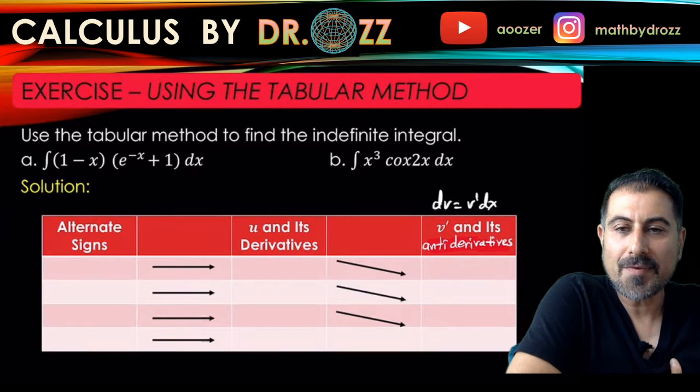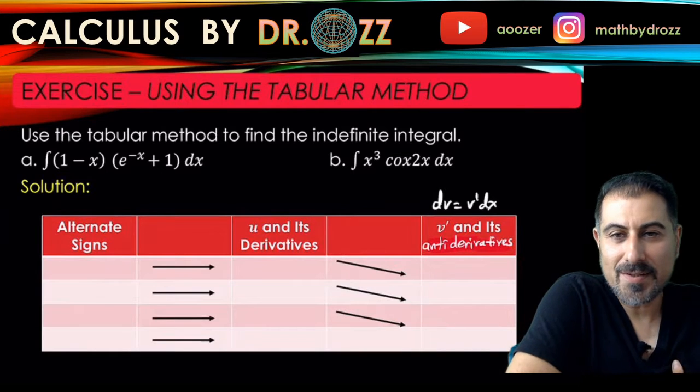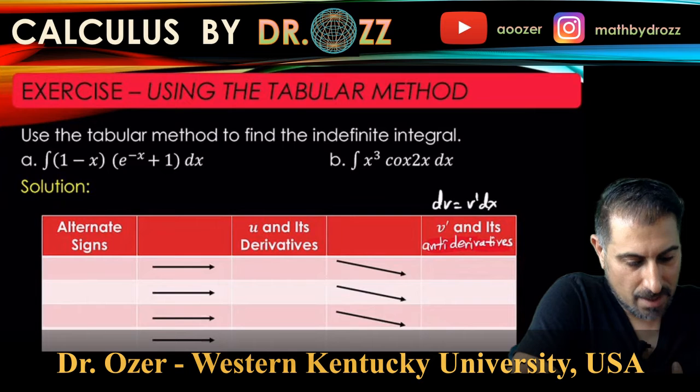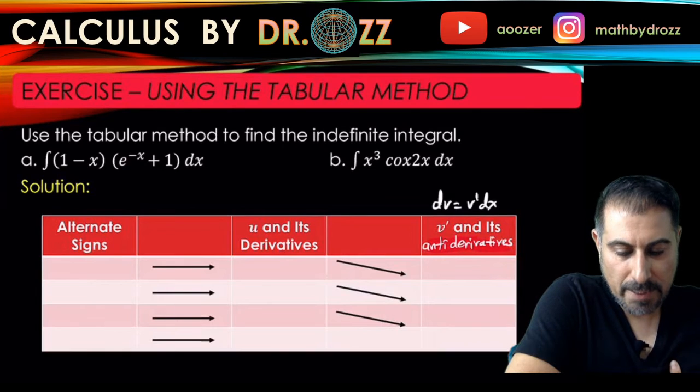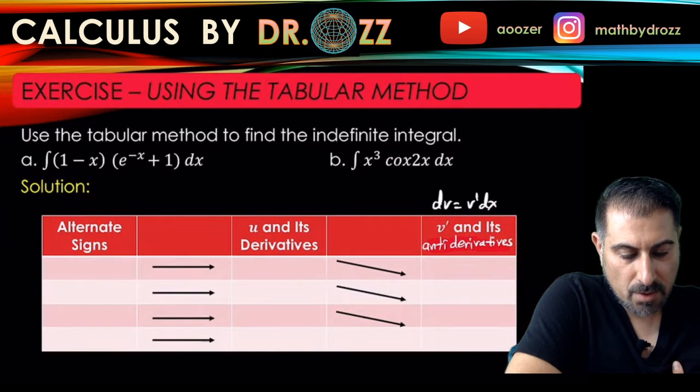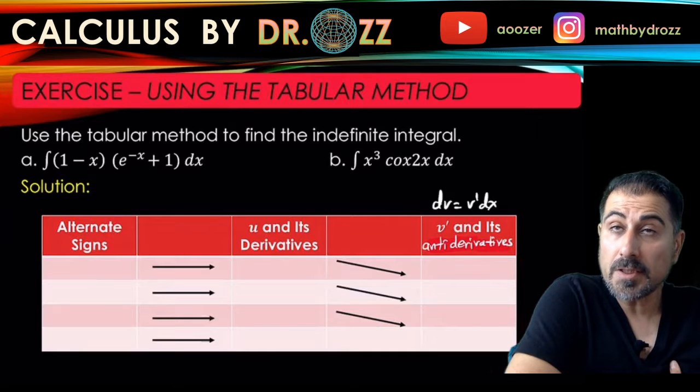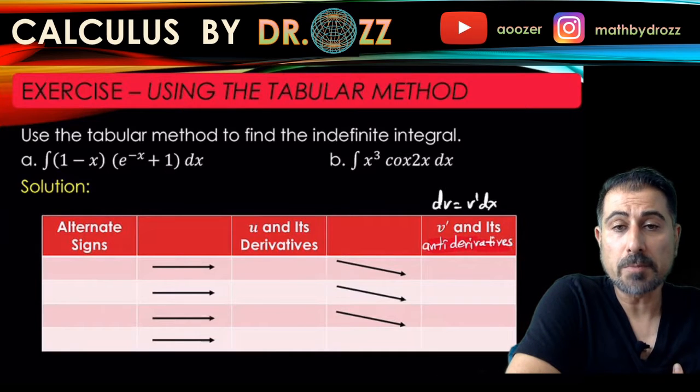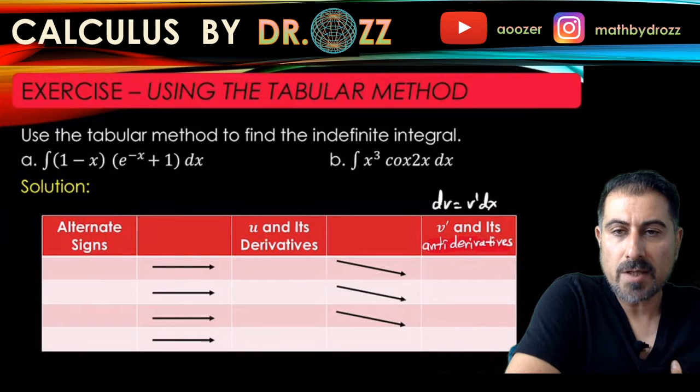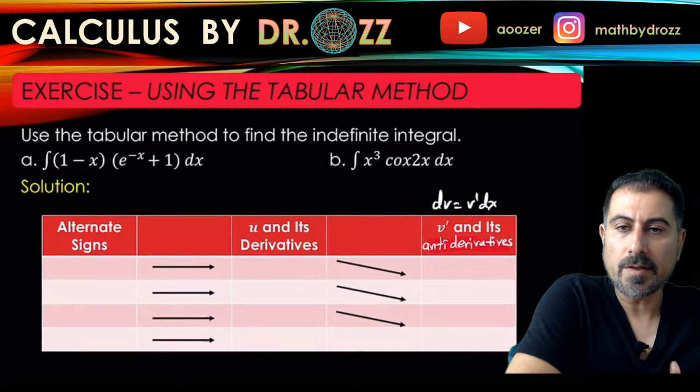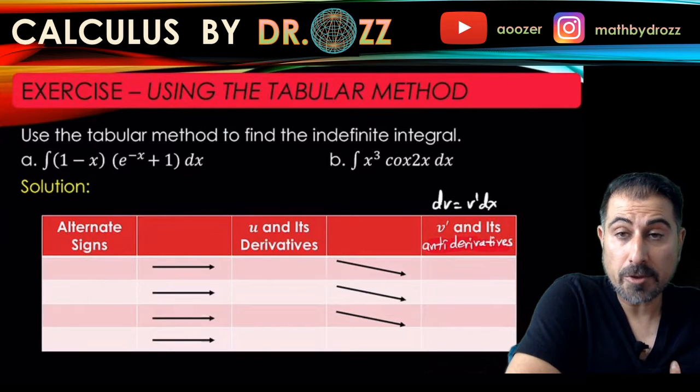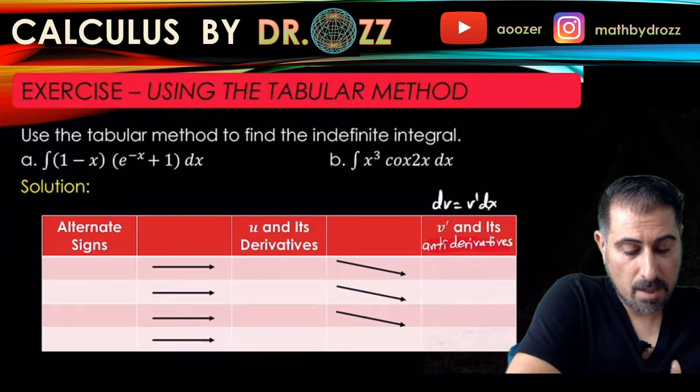All right, let's start with part a. This is a very technical procedure, the tabular method, but it's a good shortcut for the application of integration by parts. We're going to use this when we have integrals where we have to apply integration by parts more than once. This table works just awesome.